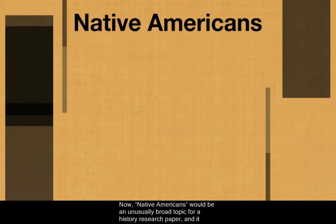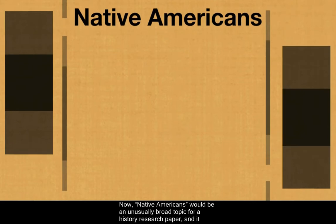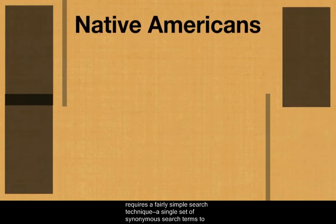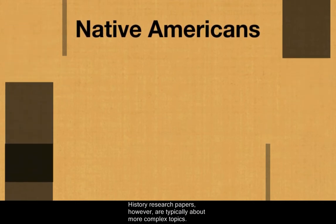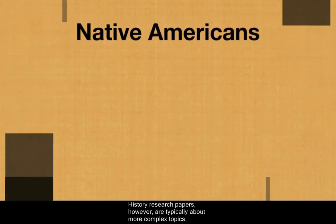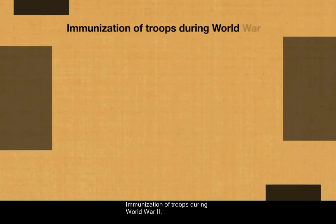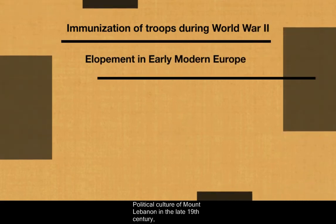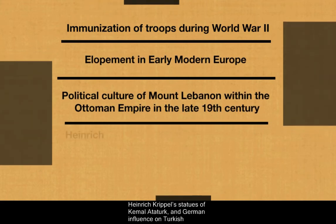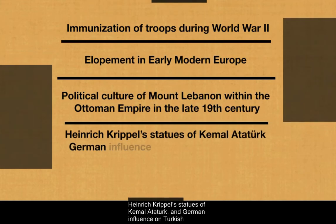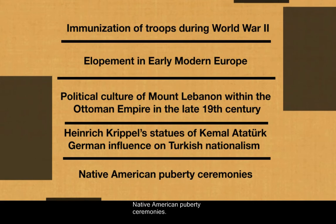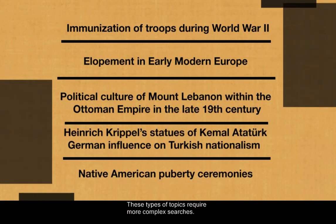Now, Native Americans would be an unusually broad topic for a history research paper, and it requires a fairly simple search technique — a single set of synonymous search terms to represent the topic. History research papers, however, are typically about more complex topics. For example: immunization of troops during World War II, elopement in early modern Europe, political culture of Mount Lebanon in the late 19th century, Heinrich Krippel's statues of Kemal Ataturk and German influence on Turkish nationalism, or Native American puberty ceremonies. These types of topics require more complex searches.